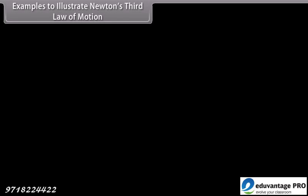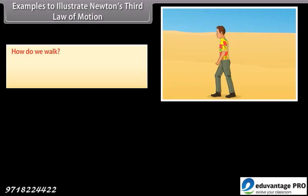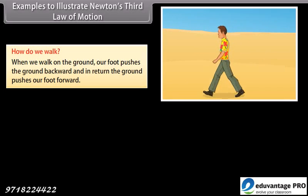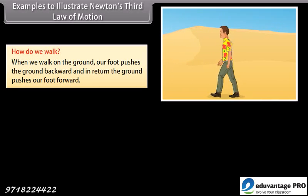Examples to illustrate Newton's third law of motion. How do we walk? When we walk on the ground, our foot pushes the ground backward, and in return, the ground pushes our foot forward.